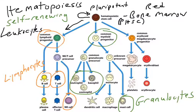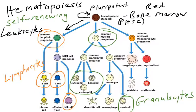The myeloid lineage consists of a number of different leukocytes. The ones circled here are granulocytes: the neutrophil, eosinophil, basophil, and mast cell. These are immune cells that, when they recognize a pathogen, fuse it with granules present in their cytoplasm. These granules are filled with toxins, and when pathogens are exposed to these toxins, the pathogens die.